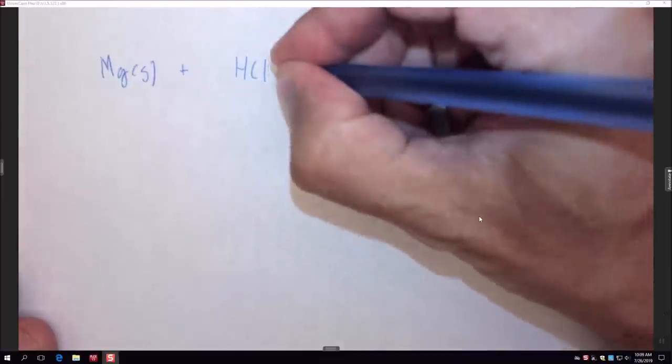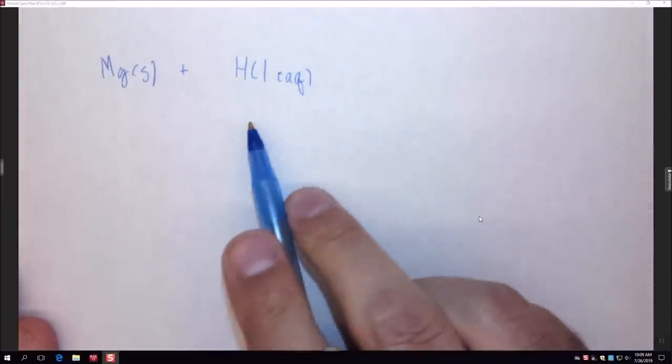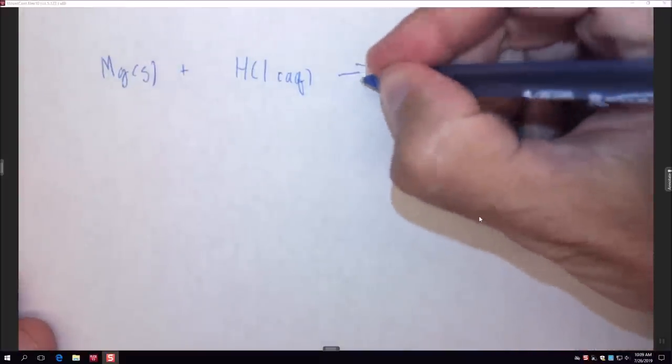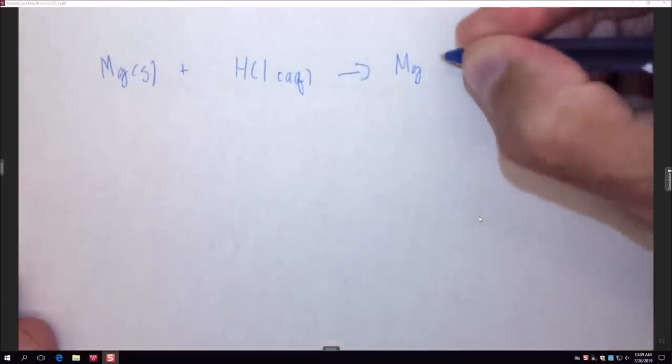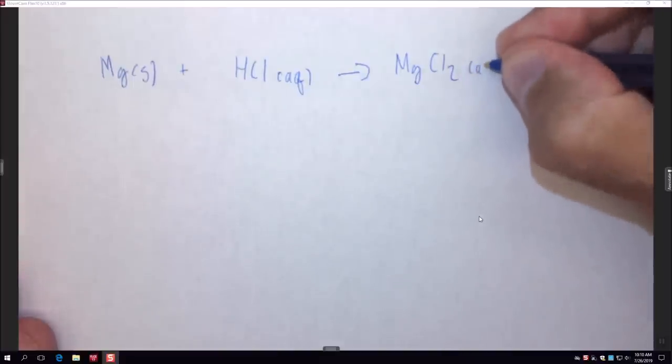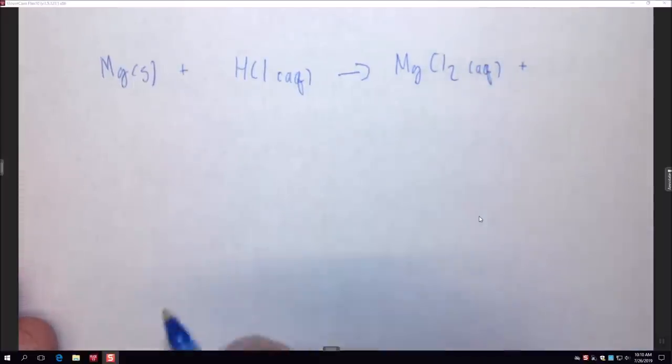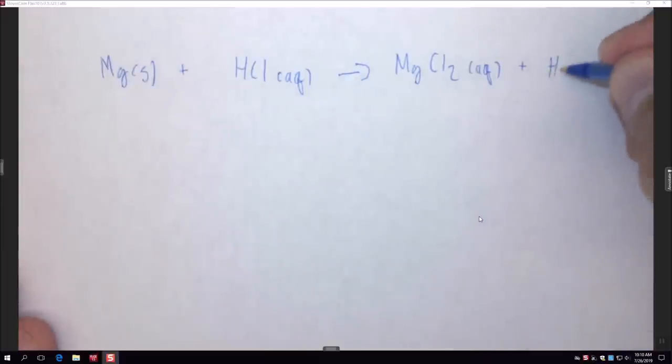The first thing we're going to do is turn magnesium metal — a shiny ribbon of metal — into a magnesium salt, specifically magnesium chloride. We're going to react magnesium solid with HCl aqueous, hydrochloric acid dissolved in water. When we do this we're going to form magnesium chloride, MgCl₂, which is aqueous, and hydrogen gas.